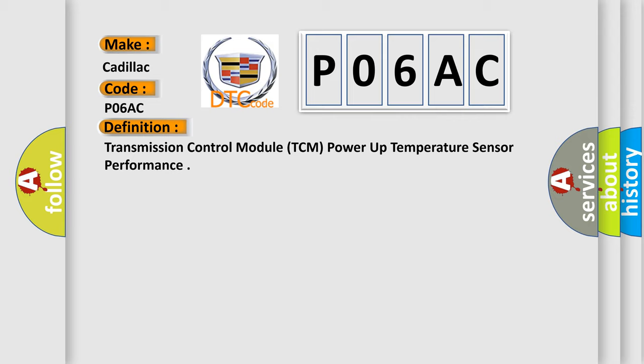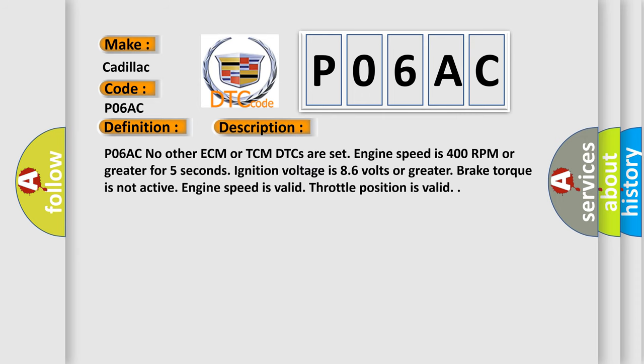And now this is a short description of this DTC code. P06AC: No other ECM or TCM DTCs set, engine speed is 400 RPM or greater for 5 seconds, ignition voltage is 8.6 volts or greater, brake torque is not active, engine speed is valid, throttle position is valid.